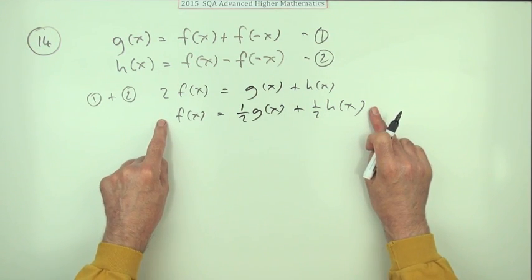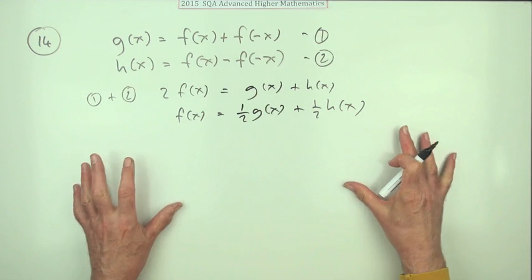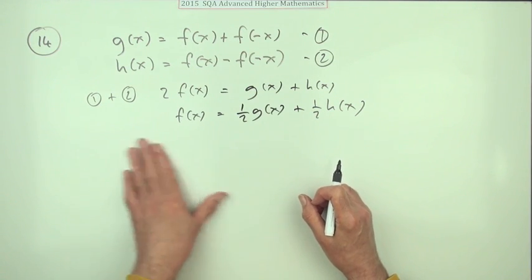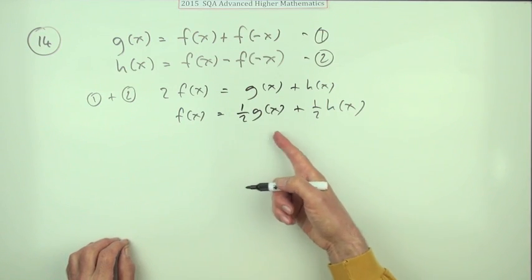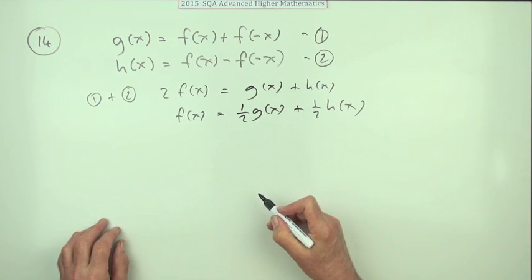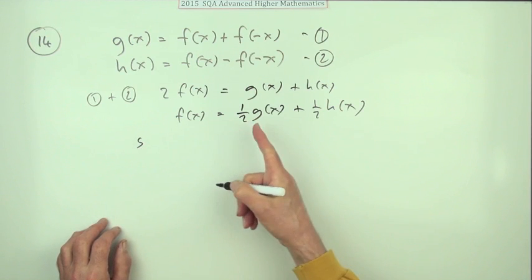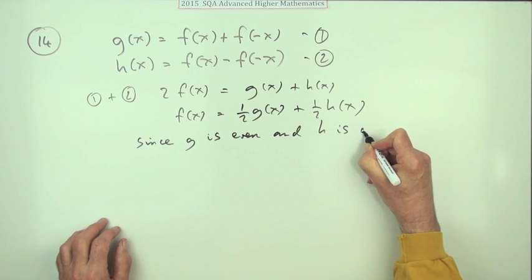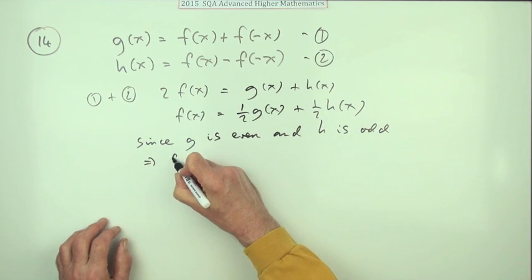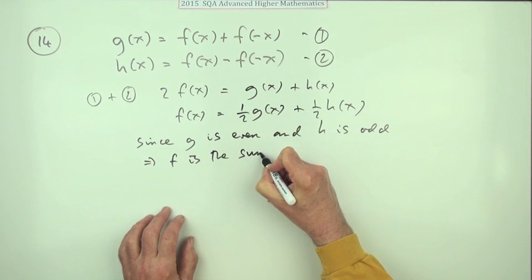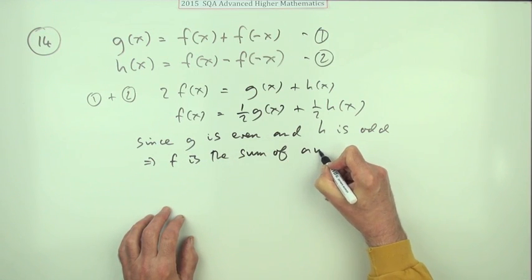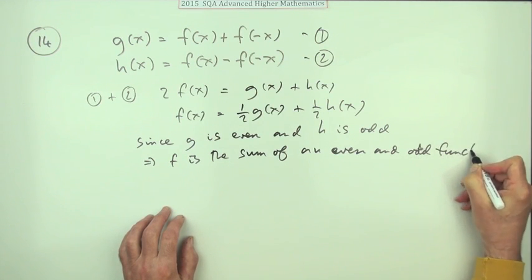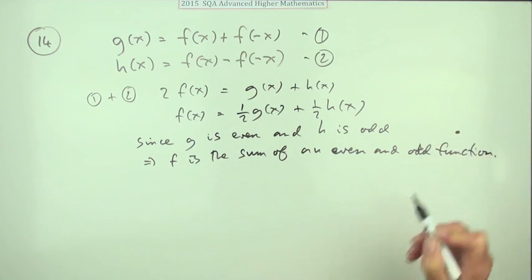There's a note here that putting that on its own wouldn't be sufficient for the last mark. You'd have to also write down a little conclusion, which would be easily forgotten—I would have done that. So you'd have to state the obvious, in other words: since g is even and h is odd, that means that f is the sum of an even and odd function. Now you get the last mark.